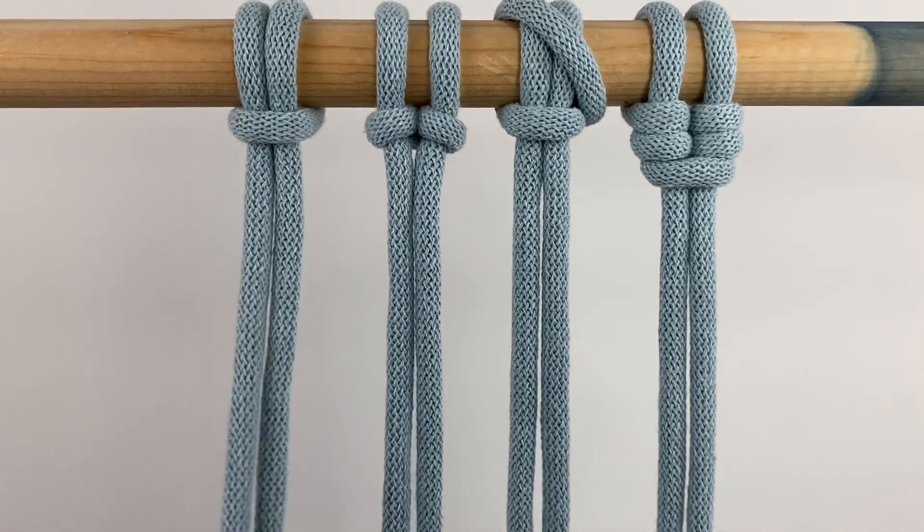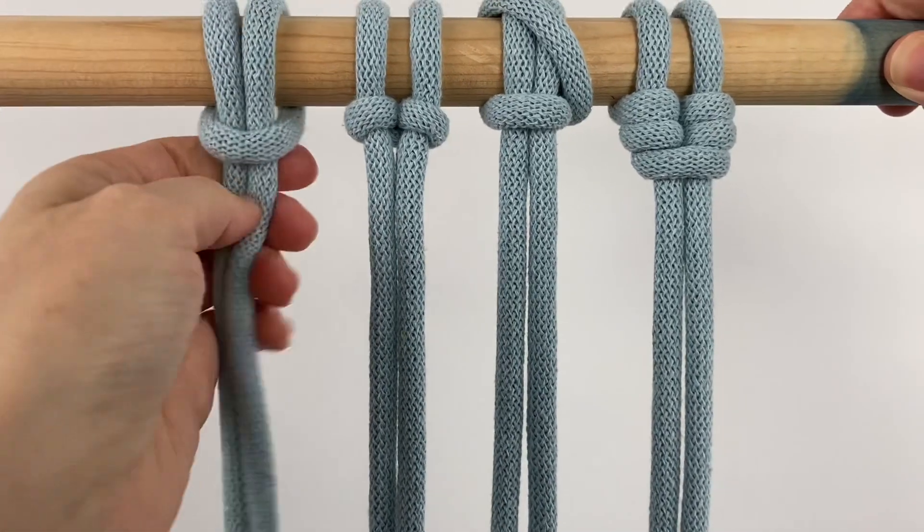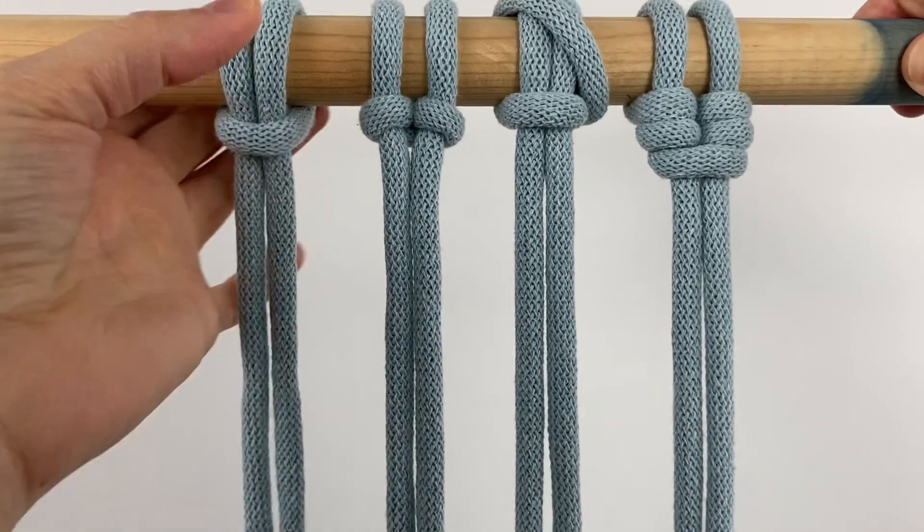One thing that can be annoying with the larks head knot is it can be kind of unstable and it loosens pretty easily, and you kind of have to adjust it a lot when you're working.